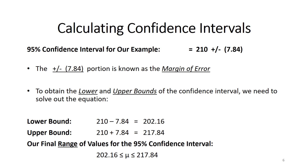Our final range of values for the 95% confidence interval is our best estimate. If somebody asks what the average weight of male inmates is now, with 95% confidence we think that the average weight of male inmates is somewhere between 202.16 pounds and 217.84 pounds. That is our best estimate of what the true average weight of male inmates is in the population.